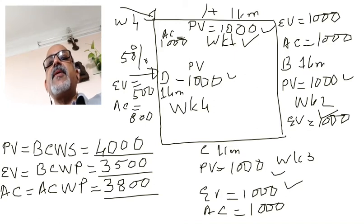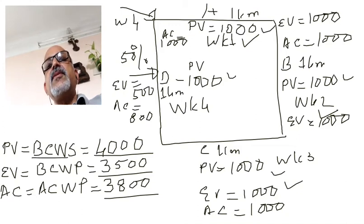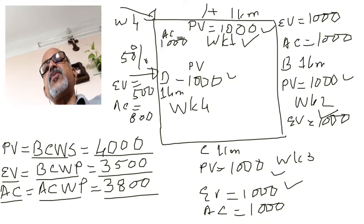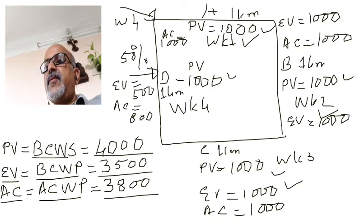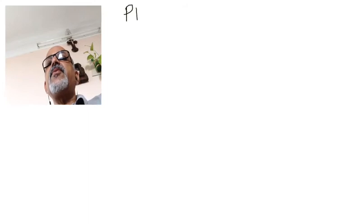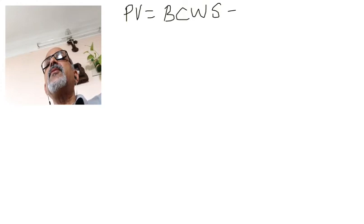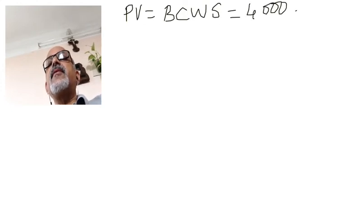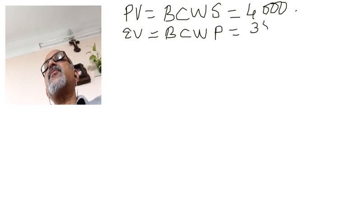So what are we saying here? We planned for work worth $4,000 in four weeks. Out of that we completed work worth $3,500, and for that we incurred an actual cost of $3,800. This explains the basic building blocks of Earned Value Management: Plan Value (BCWS) = $4,000, Earned Value (BCWP) = $3,500, and Actual Cost (ACWP) = $3,800.